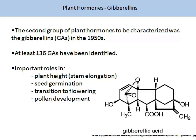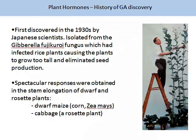The illustration on your slide is a chemical composition of gibberellic acid. There are at least 136 gibberellins identified to date. They have important roles in plant height and stem elongation, seed germination, the transition to flowering, and pollen development. Gibberellic acid was first discovered in the 1930s by Japanese scientists. It was isolated from a fungus, which it was then named after. This fungus had infected rice plants, causing the plants to grow too tall and eliminating seed production.